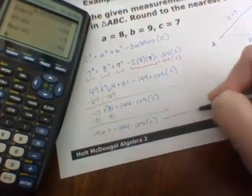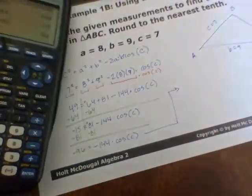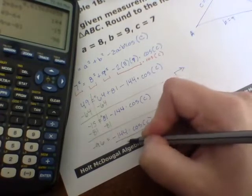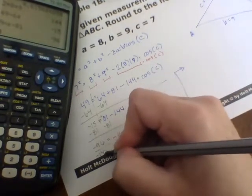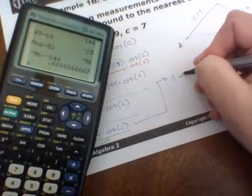And that still equals the rest of this, which is 144 times cosine of C. Remember, we're trying to get C by itself or even cosine of C. So in order to solve this, we are going to divide both sides by this negative 144 that's being multiplied by cosine.